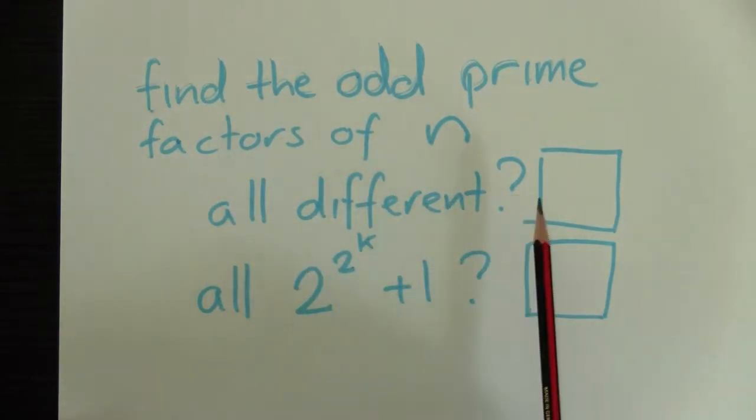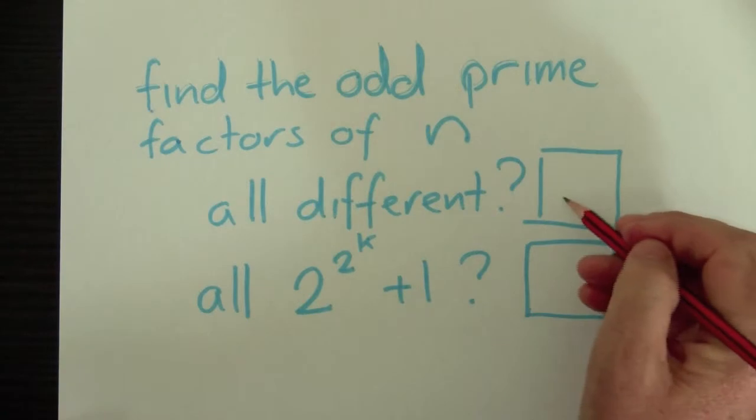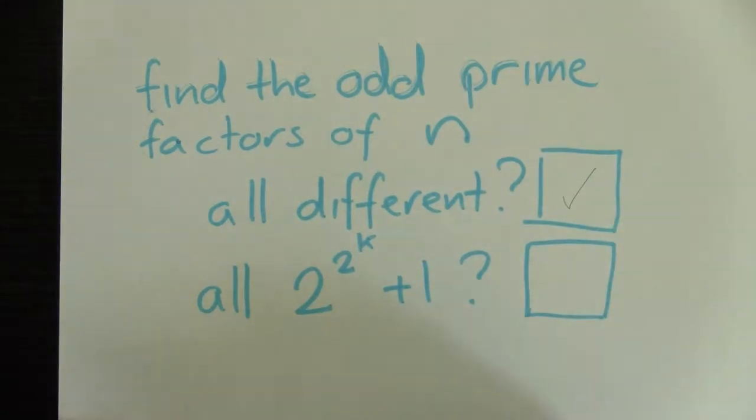Are they all different? Well, there's just three. So yes, they're all different. And are they all powers of two plus one? Three is two to the power of one plus one. So sure.